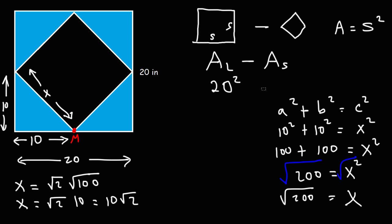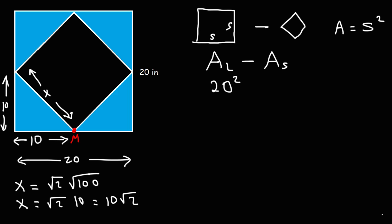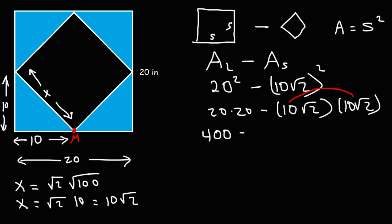Now that we have the value of X, we can calculate the area of the smaller square. It's s squared or 10 root 2 squared. 20 squared is 20 times 20, which is 400. 10 root 2 squared is 10 root 2 times 10 root 2. 10 times 10 is 100, and the square root of 2 times the square root of 2 is 2. So 100 times 2 is 200.